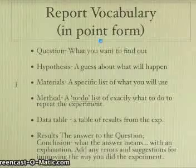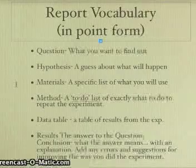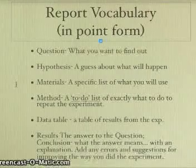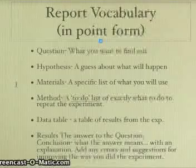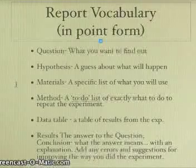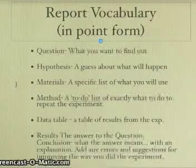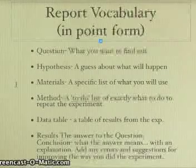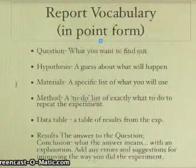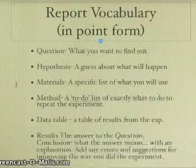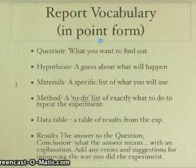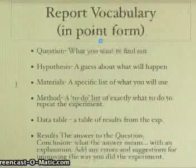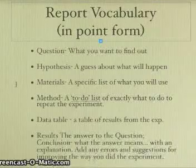The materials is a specific list of what equipment and supplies you're going to use. You want to mention anything that's special and might make a difference in the experiment. For example, we're going to be using a spring scale. We want to record the kind of spring scale because if you had a different kind of spring scale, maybe it would give different results.